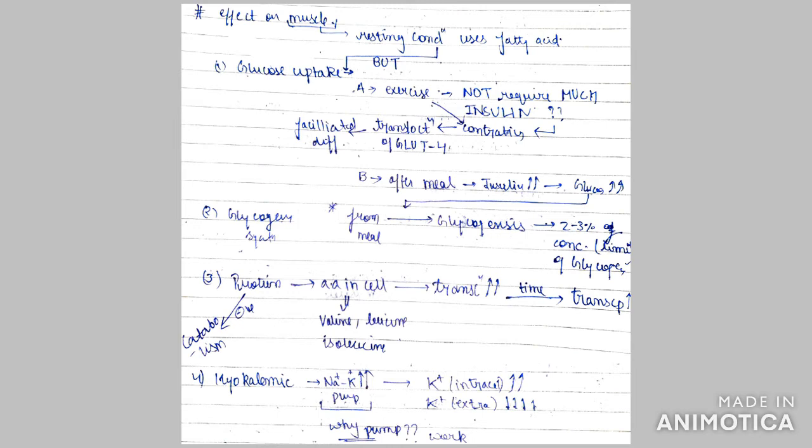Now come to the fourth point, which is very interesting. Due to more activity of insulin, more glucose will enter inside the cell and more ATP will be generated.